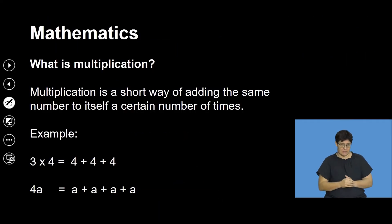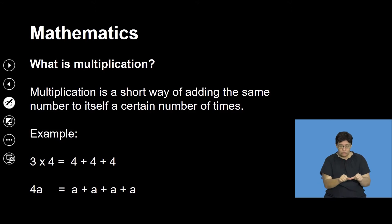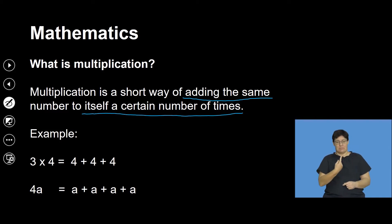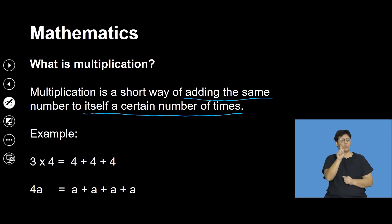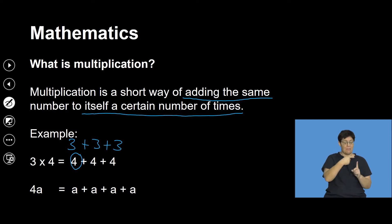As simple as this question is — what is multiplication? — I promise you, if you do not understand what exactly multiplication is, then everything you do when expanding will not make sense. Multiplication is a short way of adding the same number to itself a certain number of times. For example, 3 multiplied by 4 means I am adding 4 to itself 3 times, or adding 3 to itself 4 times — it gives the same answer.